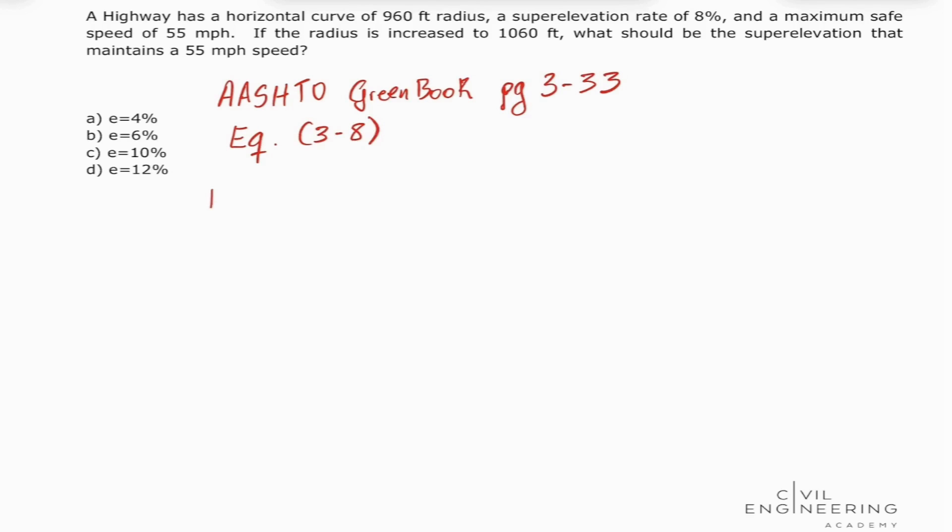So equation 3-8 says that the minimum radius is equal to our speed squared divided by 15 times 0.01 times our maximum superelevation plus our maximum friction factor.